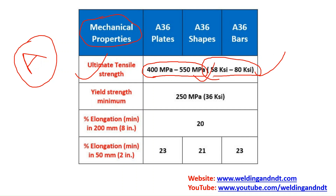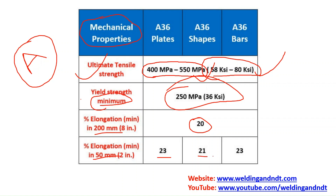The minimum yield strength of SA36 material is 250 MPa. For percentage elongation: for 200 mm gauge length material, elongation is 20%; for 50 mm gauge length, elongation is 21% for shapes (beams, channels, columns) and 23% for plates and bars.